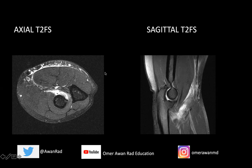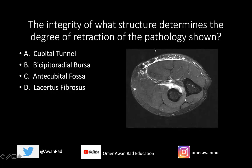This is of the elbow. We're looking at the elbow right here. This, of course, is the proximal ulna, and this is the trochlea. The question I have for all of you is: the integrity of what structure determines the degree of retraction of the pathology shown? Is it the cubital tunnel, the precipital radial bursa, the anticubital fossa, or the lacertus fibrosus?